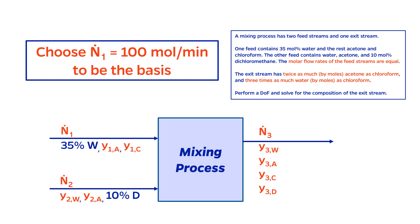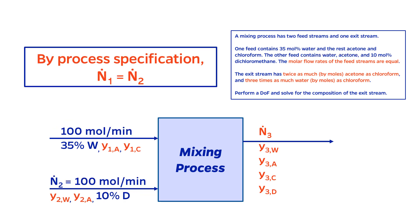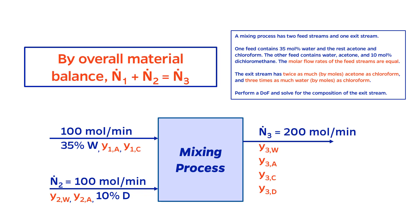Let's try it. Let's choose the first feed stream to equal 100 moles per minute. According to the process specification that the flow rates of the feed streams are equal, this means that the second feed stream is also 100 moles per minute. From an overall material balance, we have 100 plus 100 equals 200 moles per minute for the exit stream flow rate.